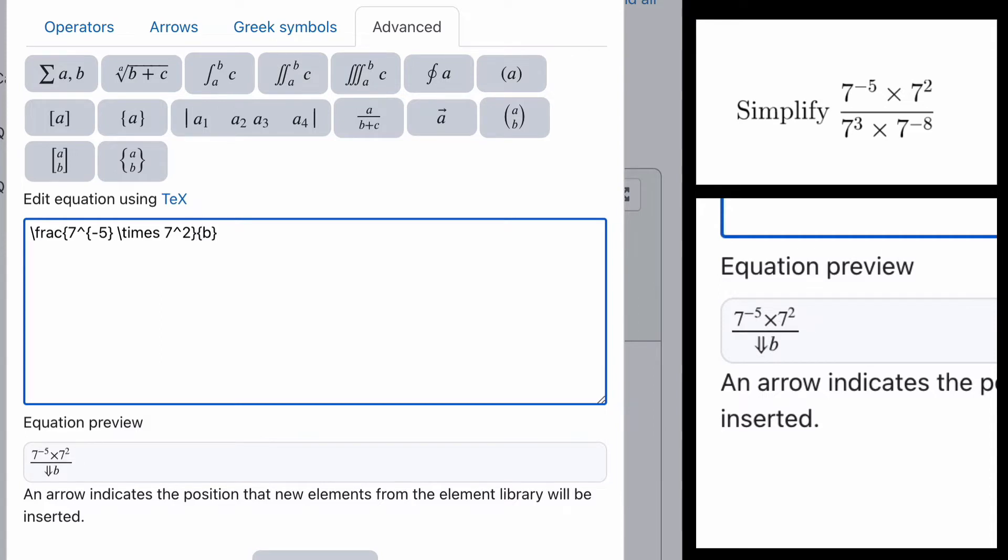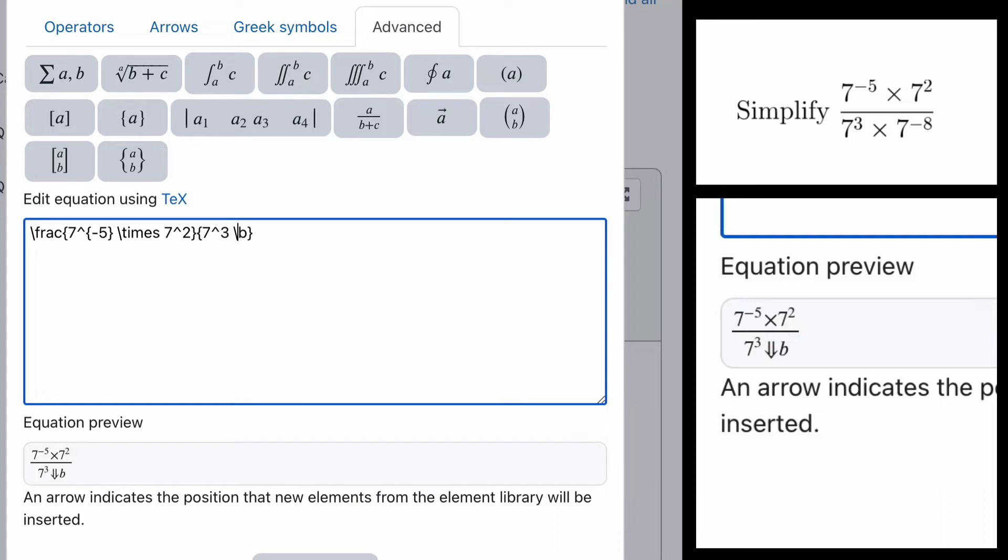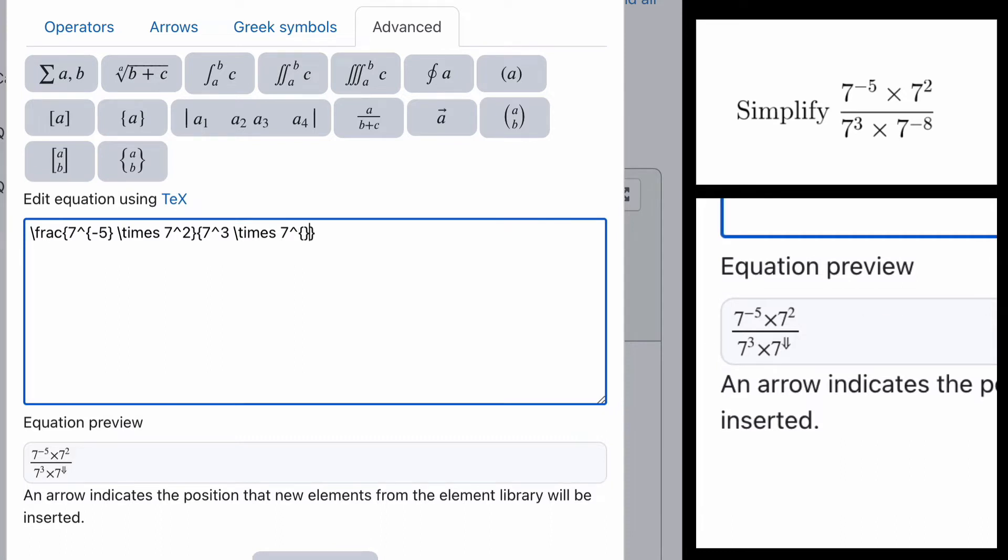Now what do we do with our second one? It's basically the same sort of thing. We've got 7. Up arrow number 3. And then we put in the word slash times to put in the time symbol. We can get rid of the B. And we've got 7 again. And this time we put our up arrow. We put our two brackets in this time. So we're going to put the minus 8 into that. And we now have the nice 7 to the minus 5 times 7 squared over 7 cubed times 7 to the minus 8. Or negative 8.